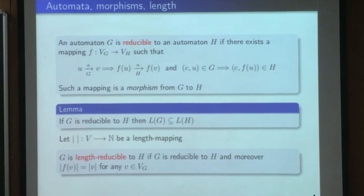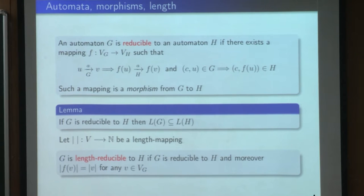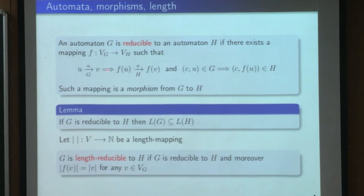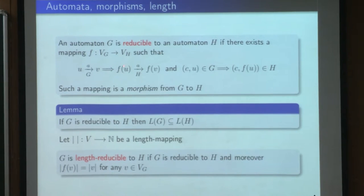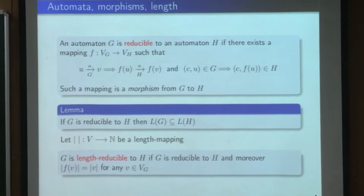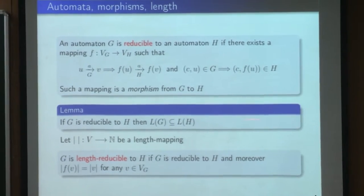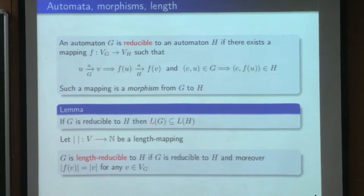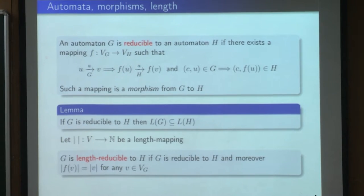A crucial notion in our paper to obtain Boolean algebras is the notion of reduction of automata. We say that an automaton G is reducible to another automaton H if there exists a mapping from the set of vertices of G to the set of vertices of H that preserves the labeling of the edges and the coloring of the vertices. Such a mapping is just a morphism. If G is reducible to H, then the language accepted by G is a subset of the language accepted by H.